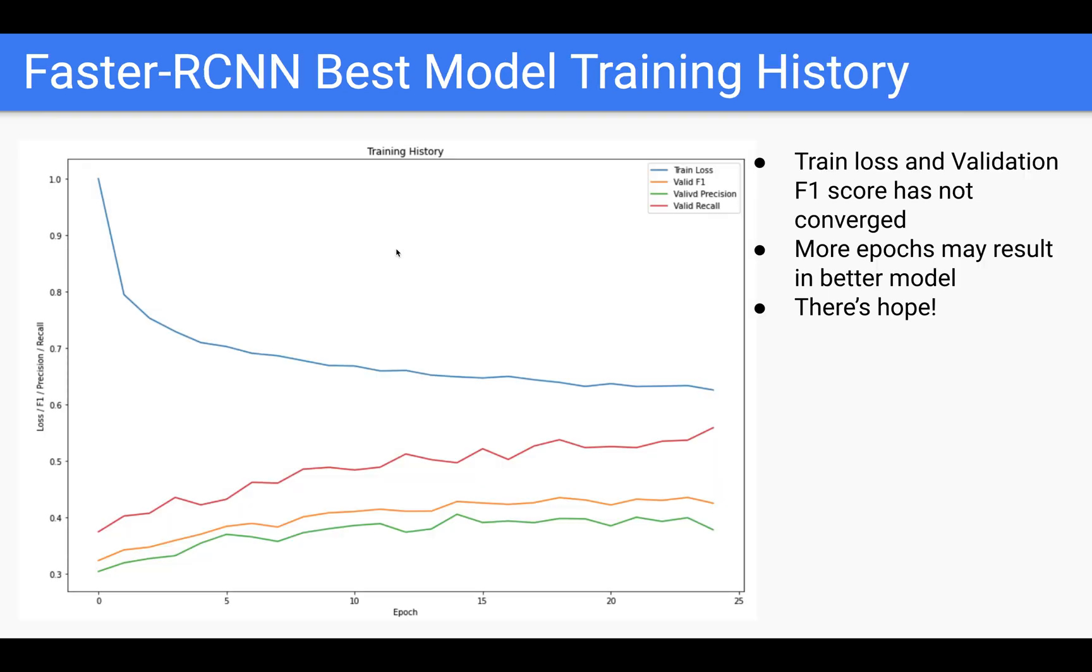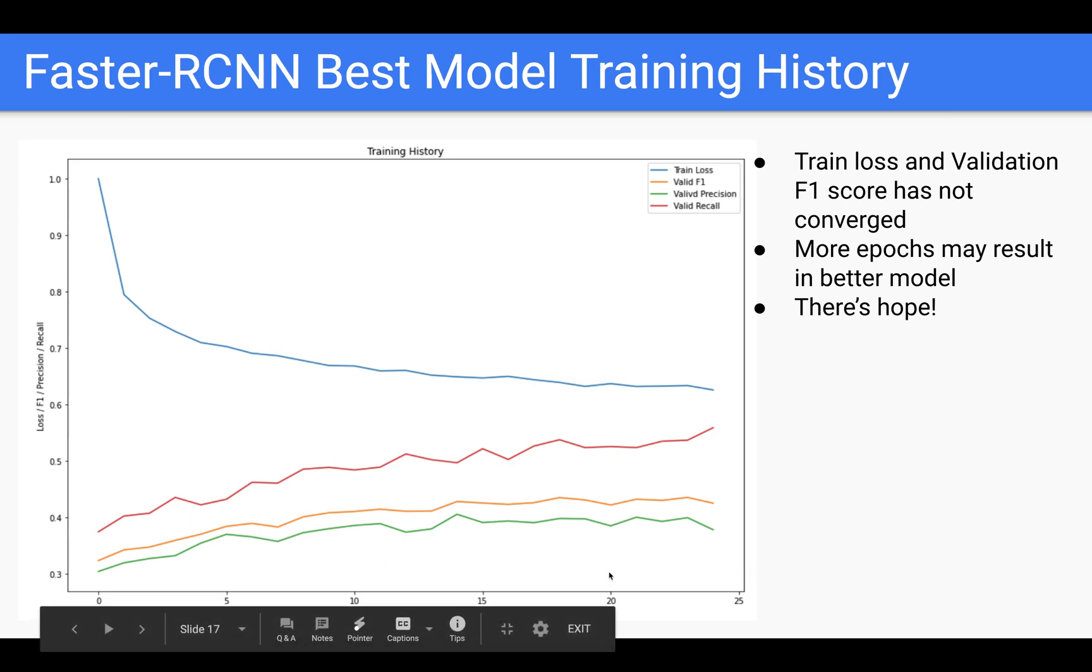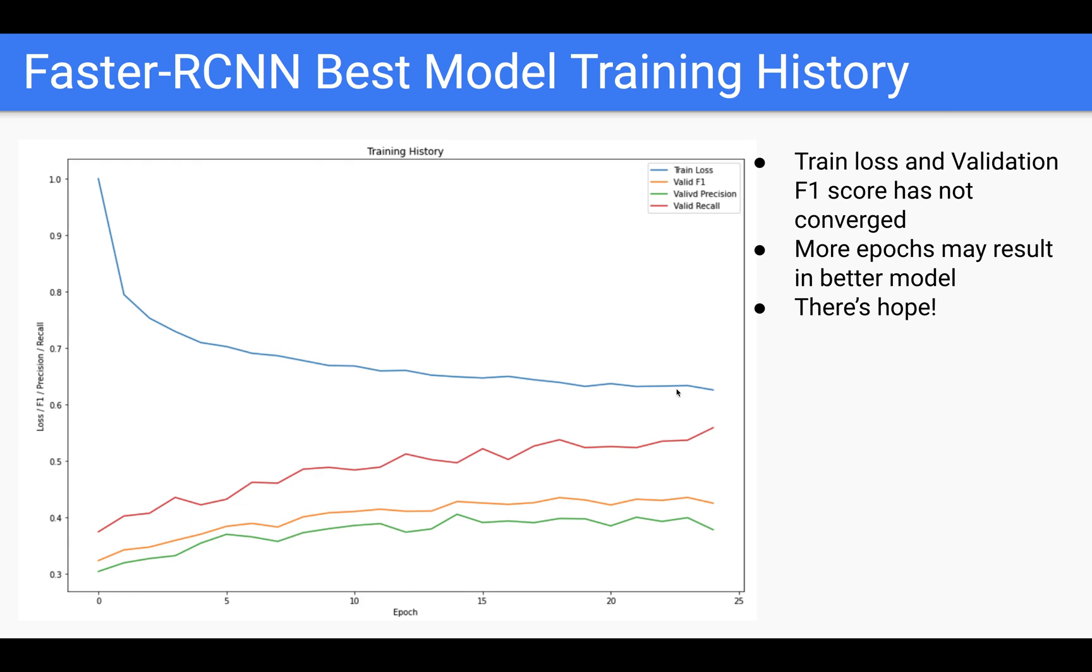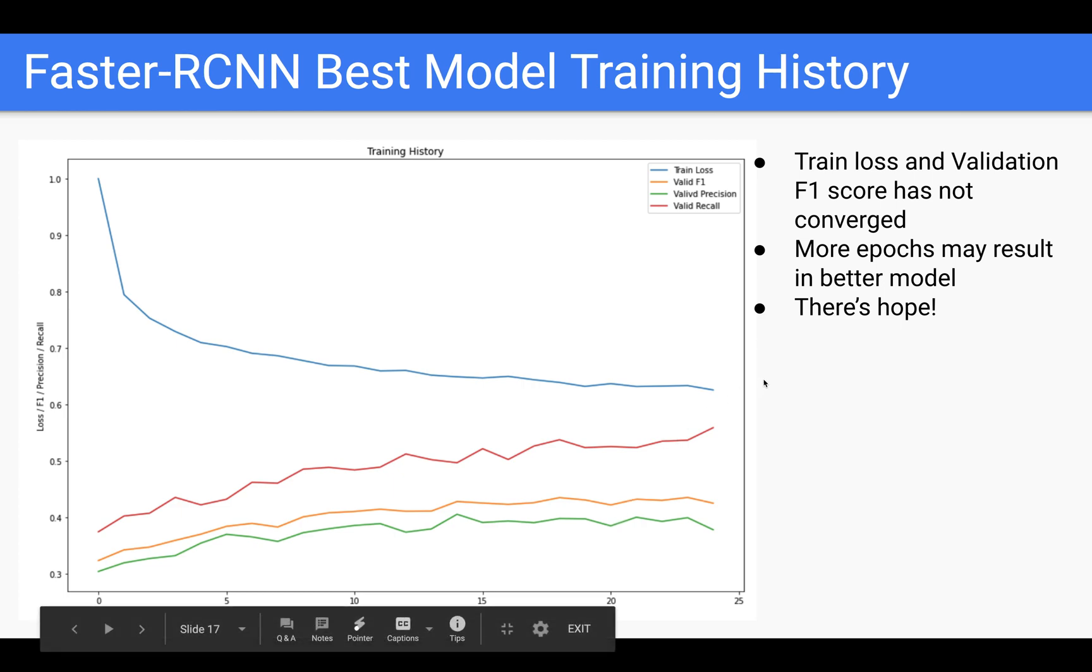This here shows the training history for the best Faster RCNN model, the one with the 0.47 test F1 score. As you can see here, this shows training loss curve. This looks like a perfect textbook curve. As the epochs increased in the x-axis, the loss actually decreases incrementally. Here's the validation F1 score. As you can see, it increases, but it's starting to plateau. To note, we see that the validation scores and the training loss has not converged yet. This to me does mean there's hope that with additional epochs of training, this will be able to converge and intersect, and I'll be able to pull up the F1 score with additional training time.